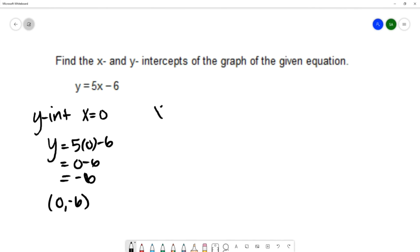Then we'll look for the x intercept. To find the x intercept, you're going to let y equal 0 within your equation. Substituting that 0 in for y would give the equation 0 equals 5x minus 6. I would add 6 to both sides to solve for x.